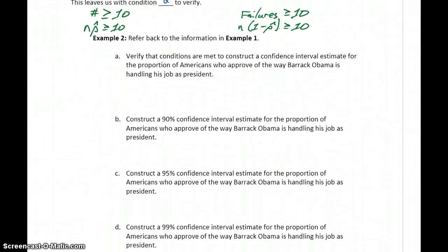In example 2, we want to refer back to the previous example. We want to verify that the conditions are met to construct a confidence interval estimate for the proportion of Americans who approve of the way Barack Obama is handling his job as president. In this case, our sample size was n equals 1,000, and our sample proportion was 0.43 or 43%.